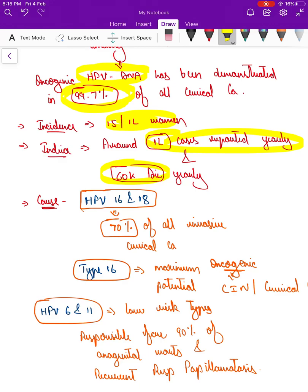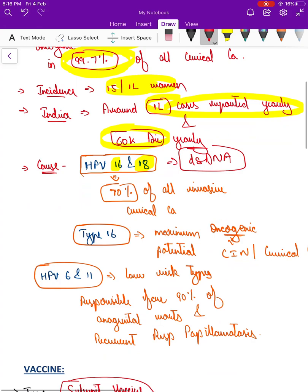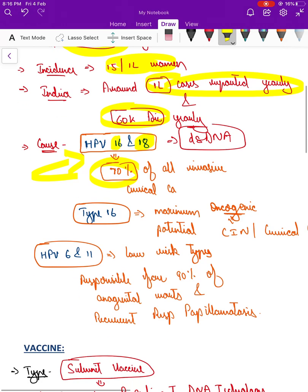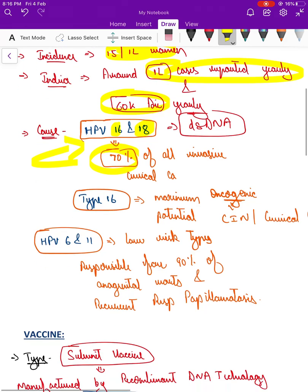It is caused by HPV 16 and 18. It is a double stranded DNA virus. Around 70 percent of all invasive carcinoma is caused by 16 and 18, so that is the reason why these two strains are being included. Among 16 and 18, type 16 has maximum oncogenic potential and it causes cervical carcinoma in situ and cervical carcinoma.